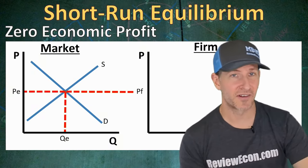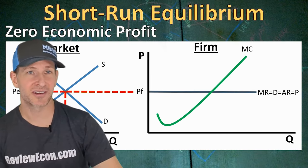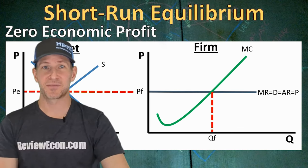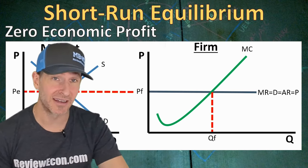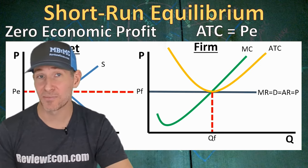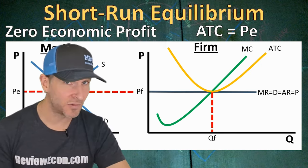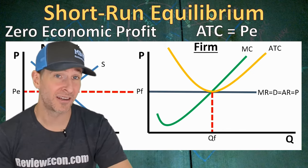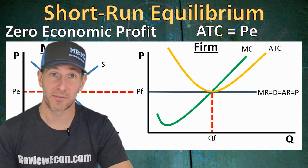Firms can also earn zero economic profit in the short run — let me show you how to draw that graph. Start with market equilibrium, move that price to the firm graph to become Mr. Darp, put in the marginal cost curve, and drop down below the MR = MC point to find the profit-maximizing quantity. Since the firm is breaking even, the average total cost equals the price at the profit-maximizing quantity. All three curves — average total cost, marginal revenue, and marginal cost — intersect at that point. The firm is breaking even, earning zero economic profit, and we call this long-run equilibrium.